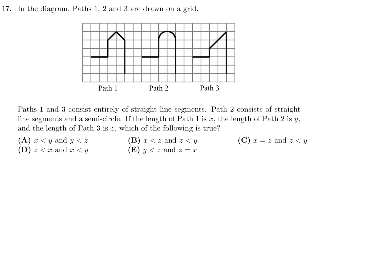In the diagram, paths 1, 2, and 3 are drawn on a grid. Paths 1 and 3 consist entirely of straight-line segments. Path 2 consists of a straight-line segment and a semicircle. The length of path 1 is x, path 2 is y, and path 3 is z. Which of the following is true? So path 1 is x, this is y, and this is z. Let's figure out what they are, and then we'll do the comparison.